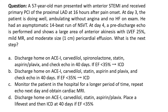A. Discharge on ACE inhibitor, beta-blockers, spironolactone, statin, aspirin, Plavix, and check echo in 40 days — if EF less than 35%, place an ICD. B. Similar to A except no spironolactone. C. Monitor the patient in the hospital for a longer period of time, repeat echo next day, and obtain cardiac MRI. D. Discharge on ACE inhibitor, beta-blockers, statin, aspirin, Plavix, place a life vest, and then ICD at 40 days if EF less than 35%.